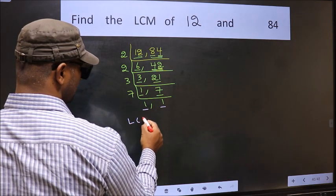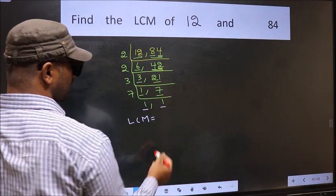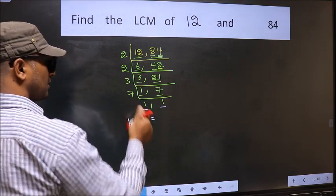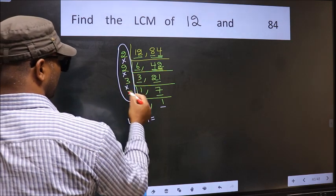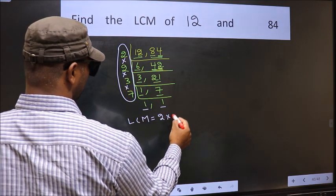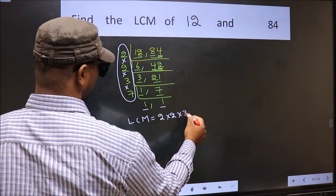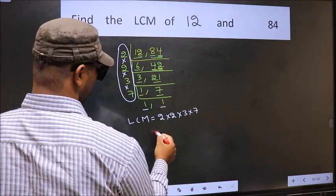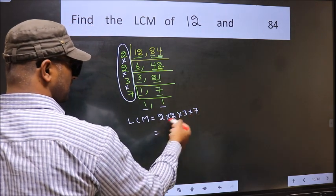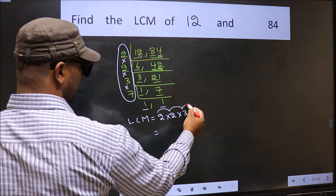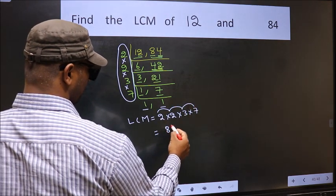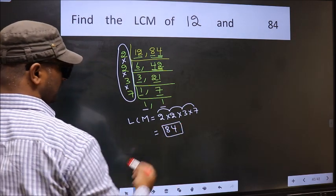So our LCM is the product of these numbers: 2 into 2 into 3 into 7. Let us multiply these numbers: 2 times 2 is 4, times 3 is 12, times 7 is 84. So 84 is our LCM.